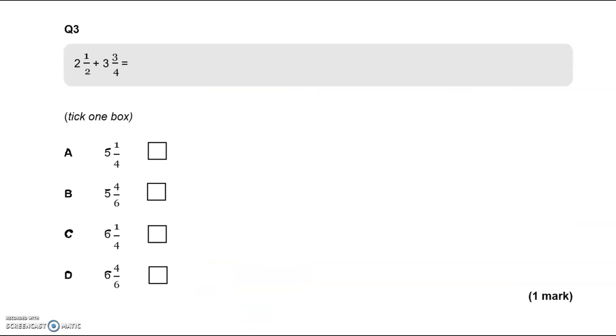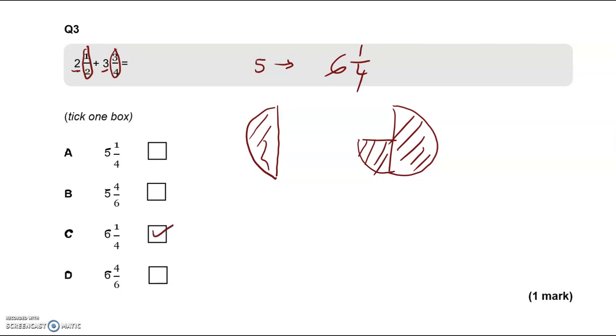In this third question we've got to add 2 and a half to 3 and 3 quarters. If we add the whole numbers first, 2 and 3 gives us 5, then we have 1 half and 3 quarters. So 1 half here and this half makes the whole, so this now becomes a 6, and we've got a quarter left. So 6 and a quarter, which is option C.